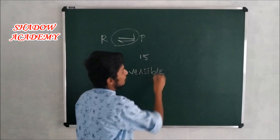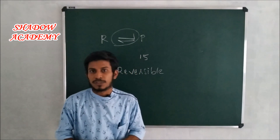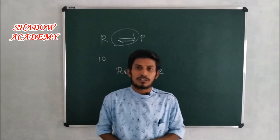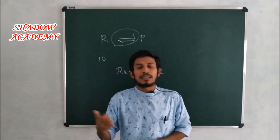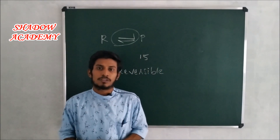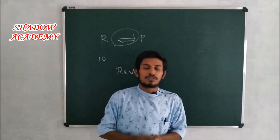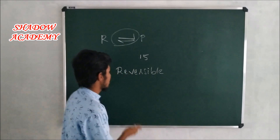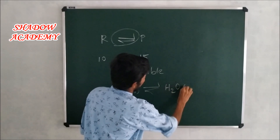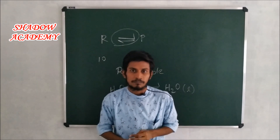Reversible reactions are the same process and the same state. If you learn about equilibrium, we have 2 types of equilibrium: equilibrium in the physical process, and equilibrium in chemical reactions. For example, we have equilibrium in the liquid state — H2O in the solid form to H2O in the liquid form. That is the ice-water equilibrium.